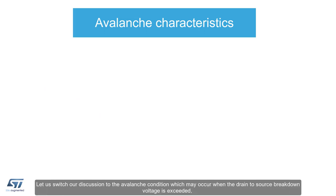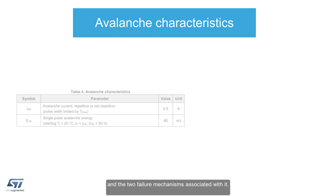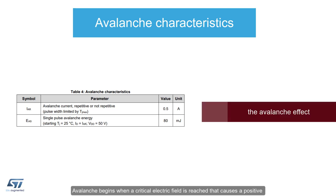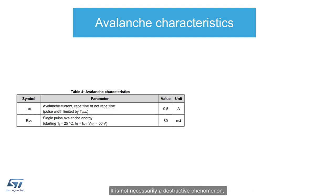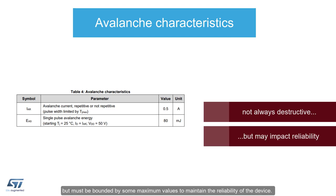Let us switch our discussion to the avalanche condition, which may occur when the drain-to-source breakdown voltage is exceeded, and the two failure mechanisms associated with it. Avalanche characteristics are typically a uniquely defined set of absolute maximum ratings within the MOSFET datasheet. Avalanche begins when a critical electric field is reached that causes a positive feedback loop of carrier concentration, called the avalanche effect. It is not necessarily a destructive phenomenon, but must be bounded by some maximum values to maintain the reliability of the device.